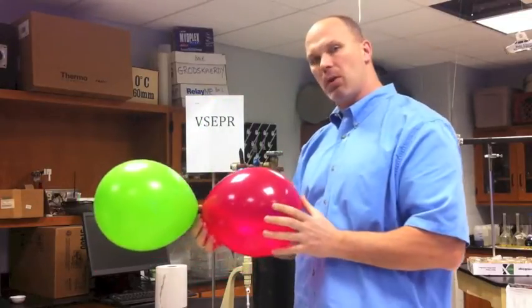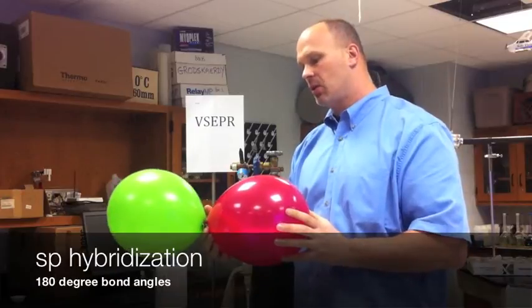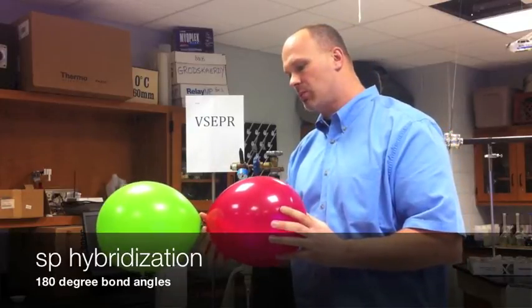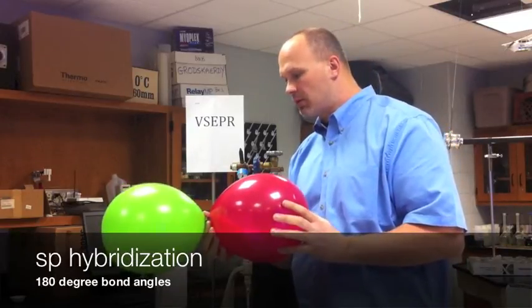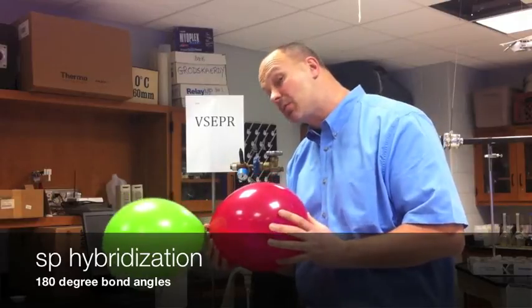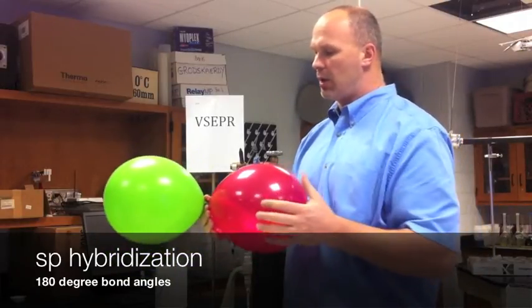So that would be a 180-degree shape. So anything that's SP hybridized, where a combination of one P and one S would make two equal orbitals of the same energy level, somewhere in between, and have a bond angle of 180.